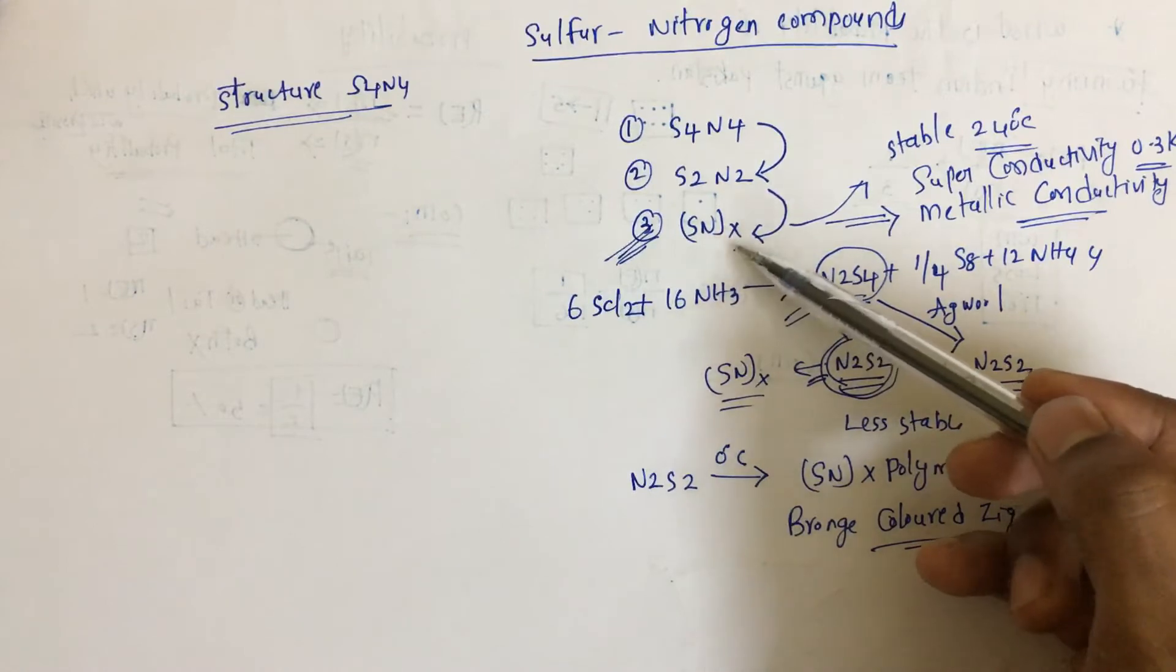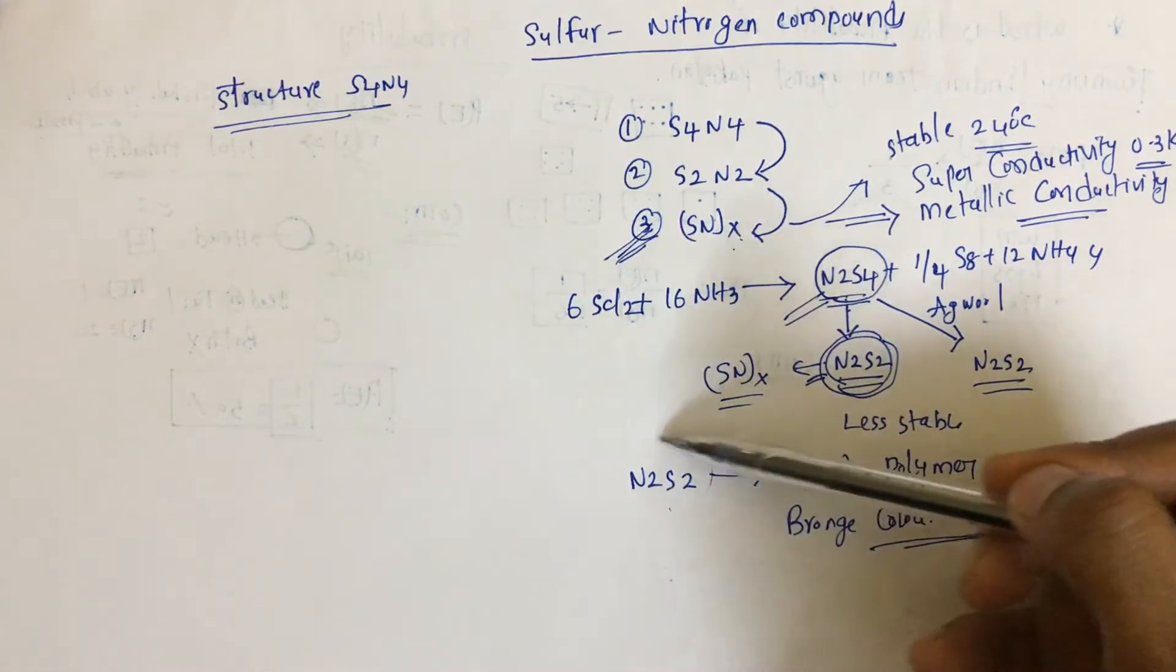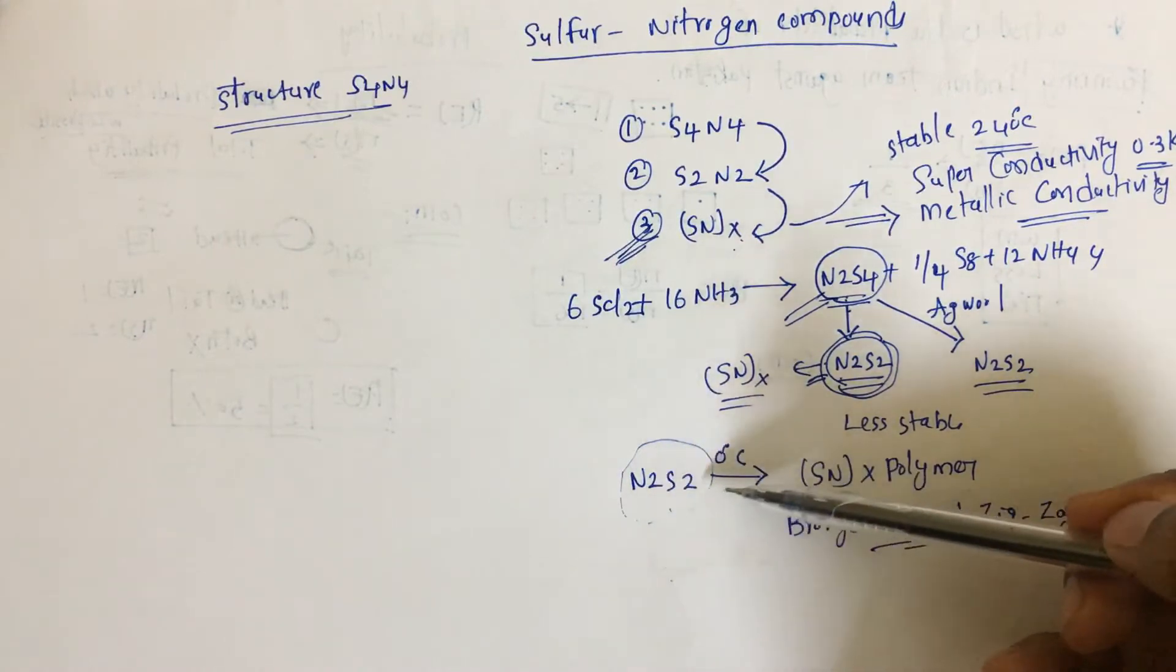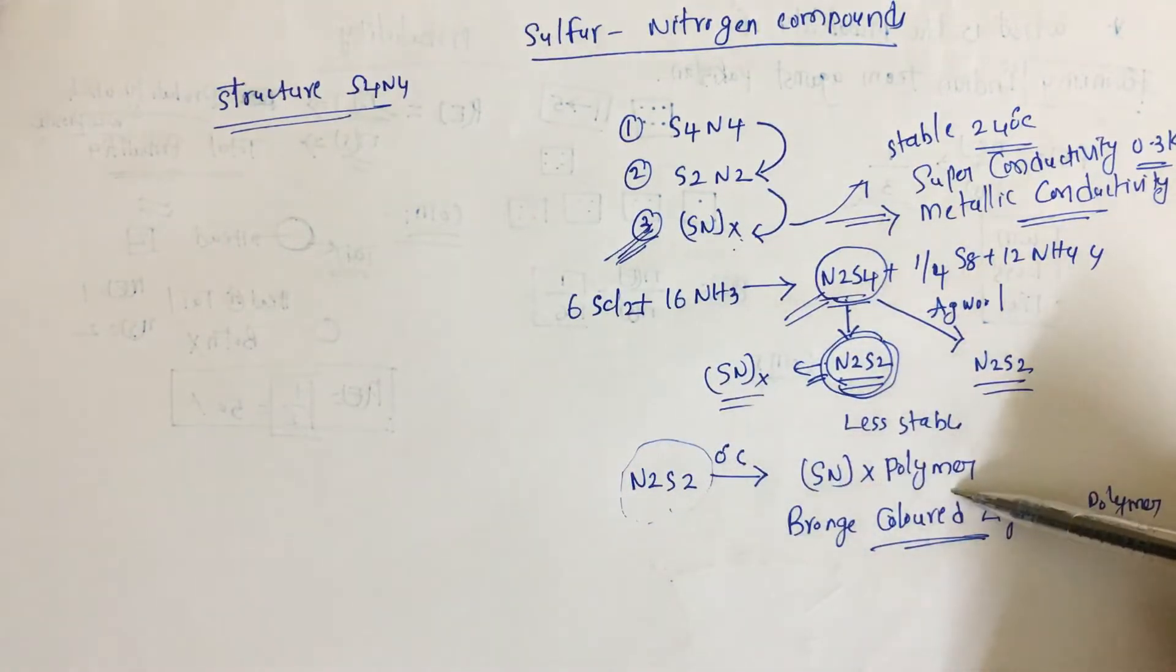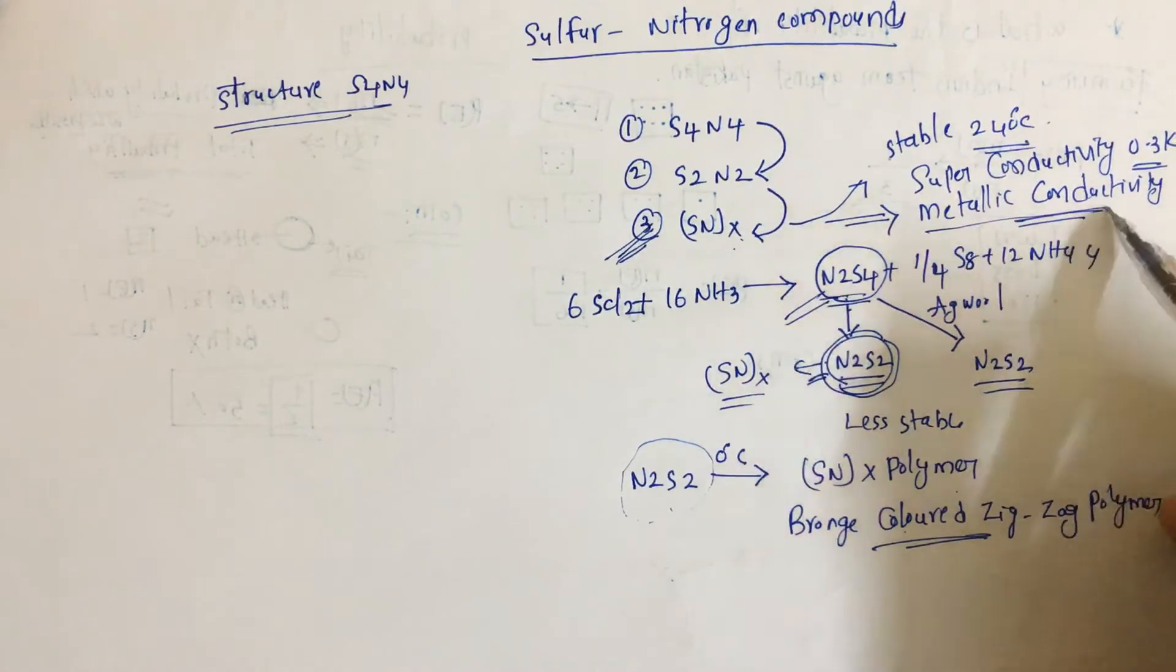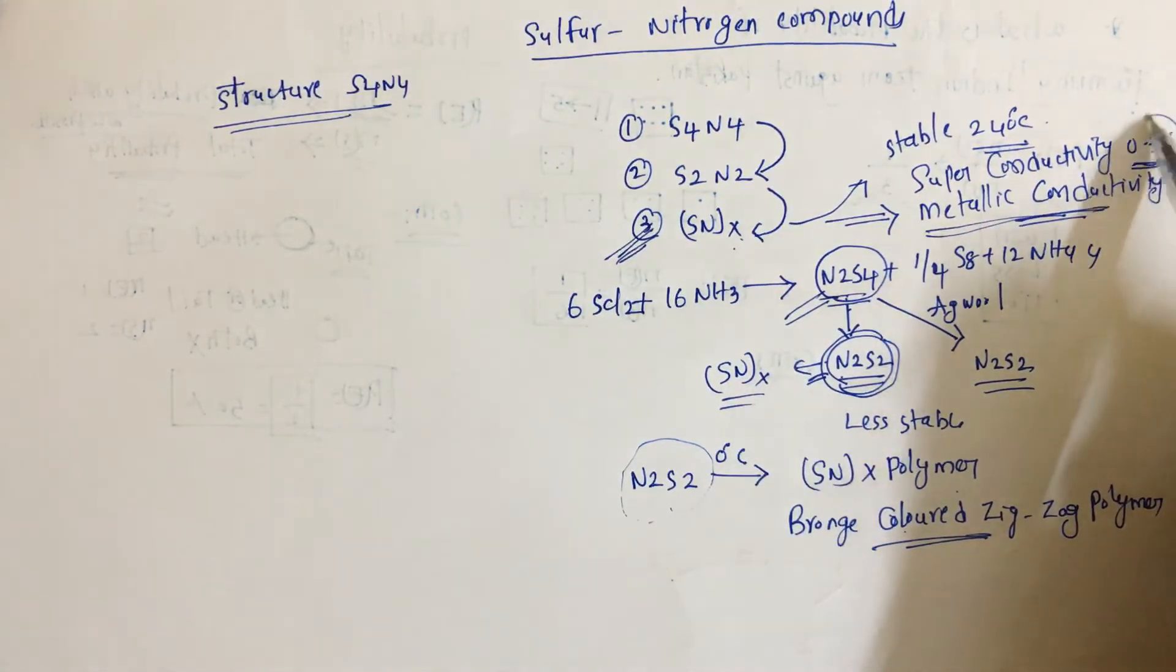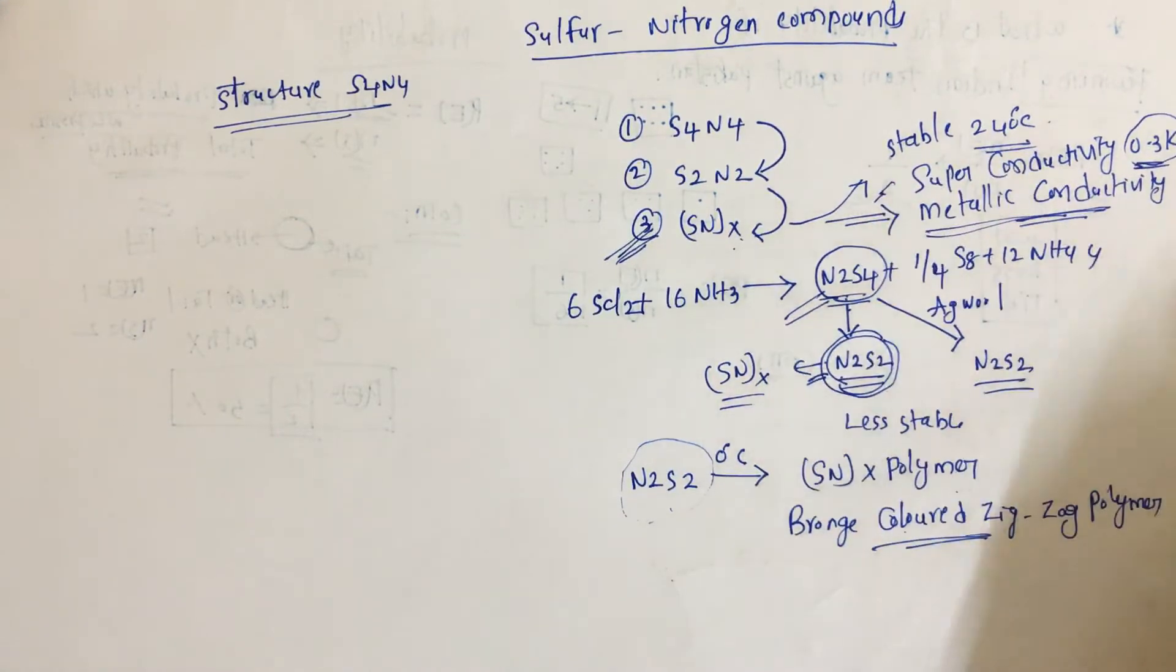What we need to remember: SNx polymer can be prepared by keeping N2S2 for some time at zero degree temperature. It's a bronze colored zigzag polymer, stable up to 240 degree temperature, can conduct metallic conductivity, and at 0.3 Kelvin it acts as a superconductor.